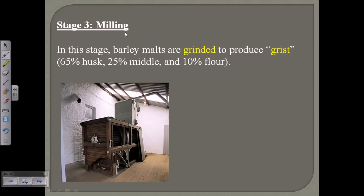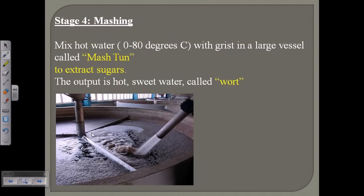The third stage is milling. The dry malts are ground to produce a powder called grist. Grist is composed of 65 percent husks, 25 percent middle, and 10 percent flour. This grist is then used for the mashing stage.